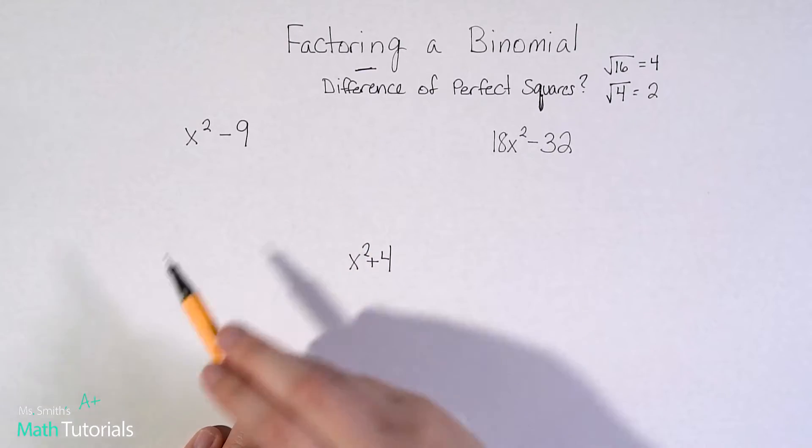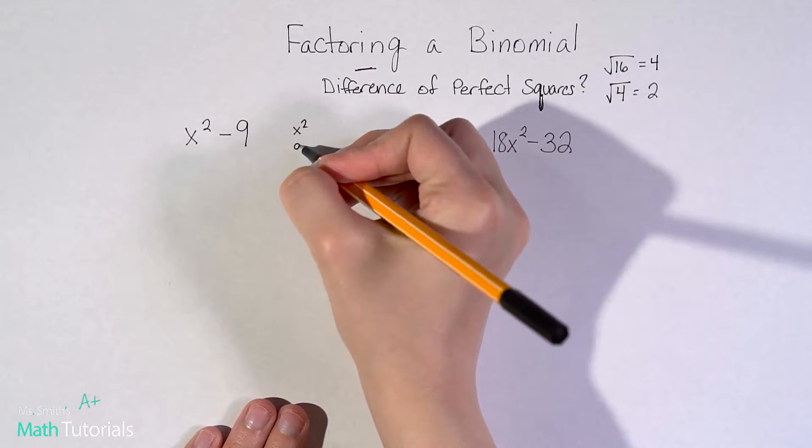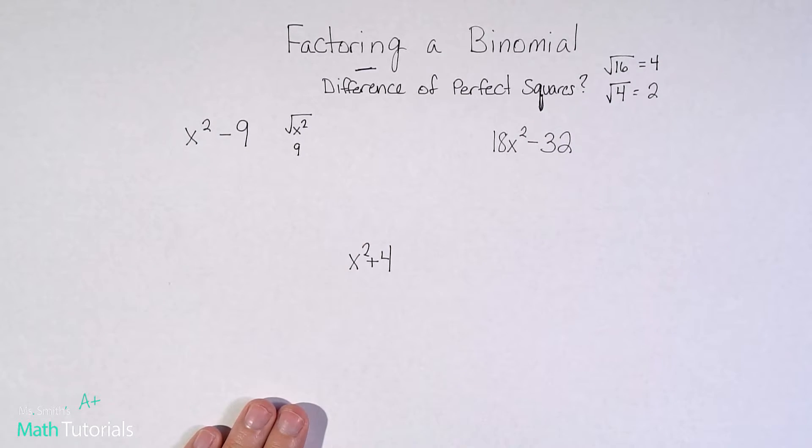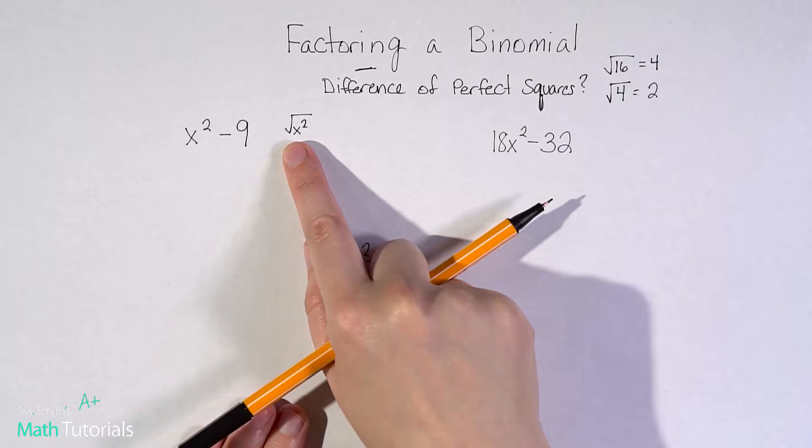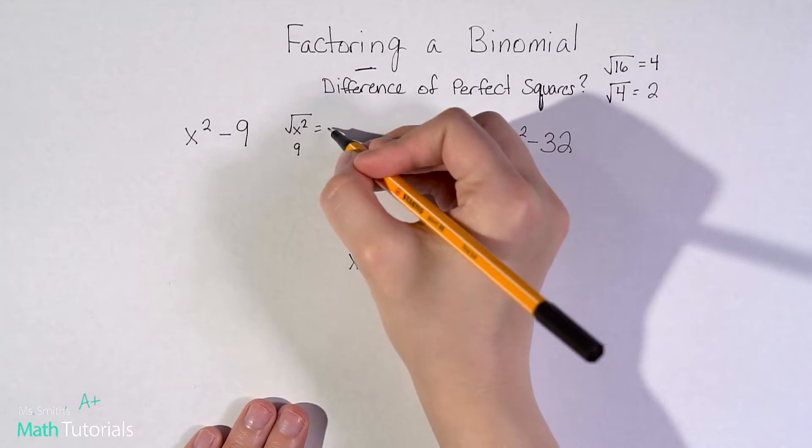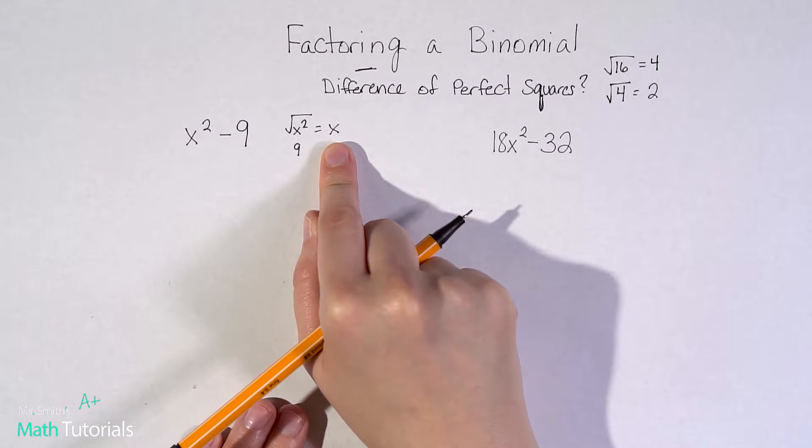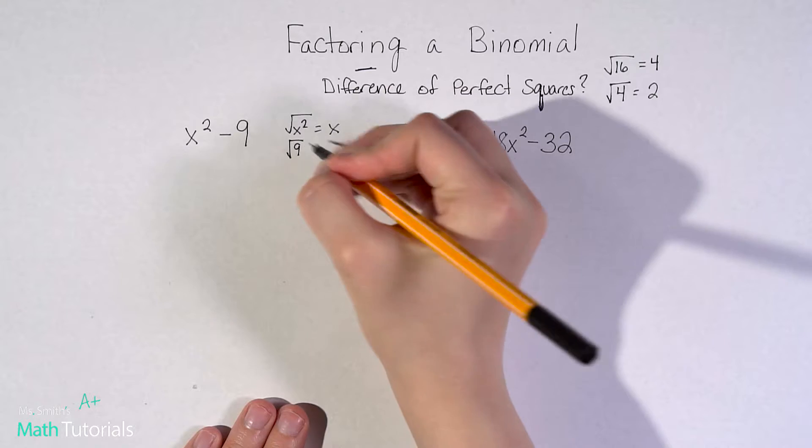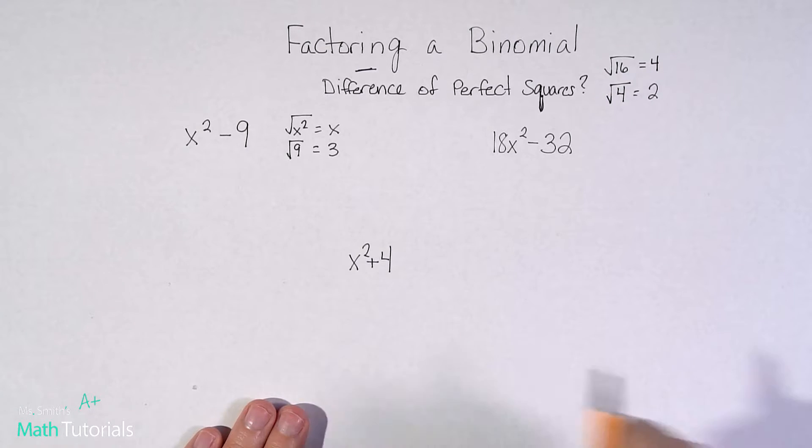Is this binomial made up of perfect squares? Meaning each term. So let's see, I've got x squared, and I've got nine. Is x squared a perfect square? Well, we can't just put a variable and a square in our calculator, and it'll tell us the answer would be x. But think about it. x squared is the same thing as x times x. So the square root of x squared is just x. So yes, that is a perfect square. What about nine? Is nine a perfect square? And if you check in your calculator, it is. The answer is three. Three times three would be nine.